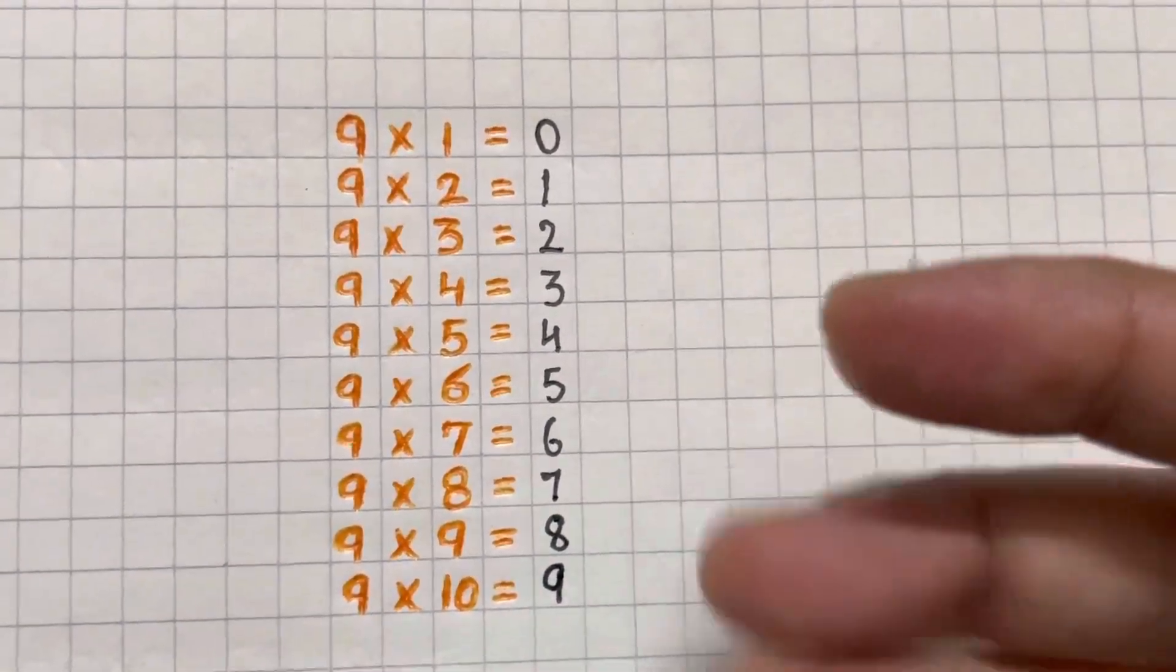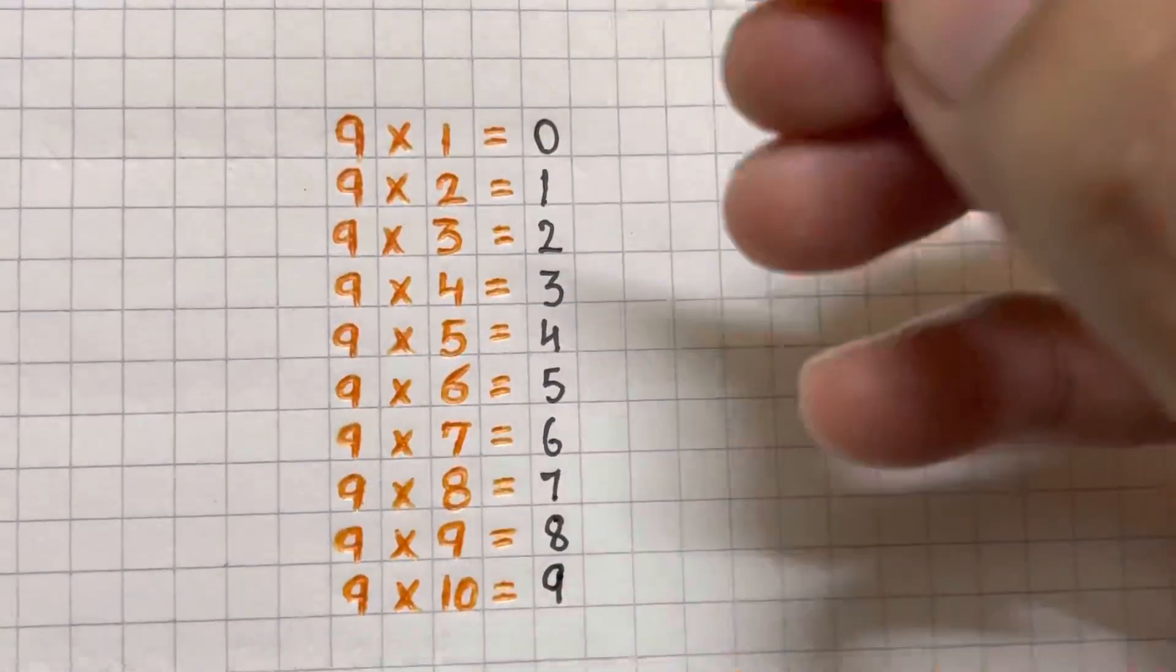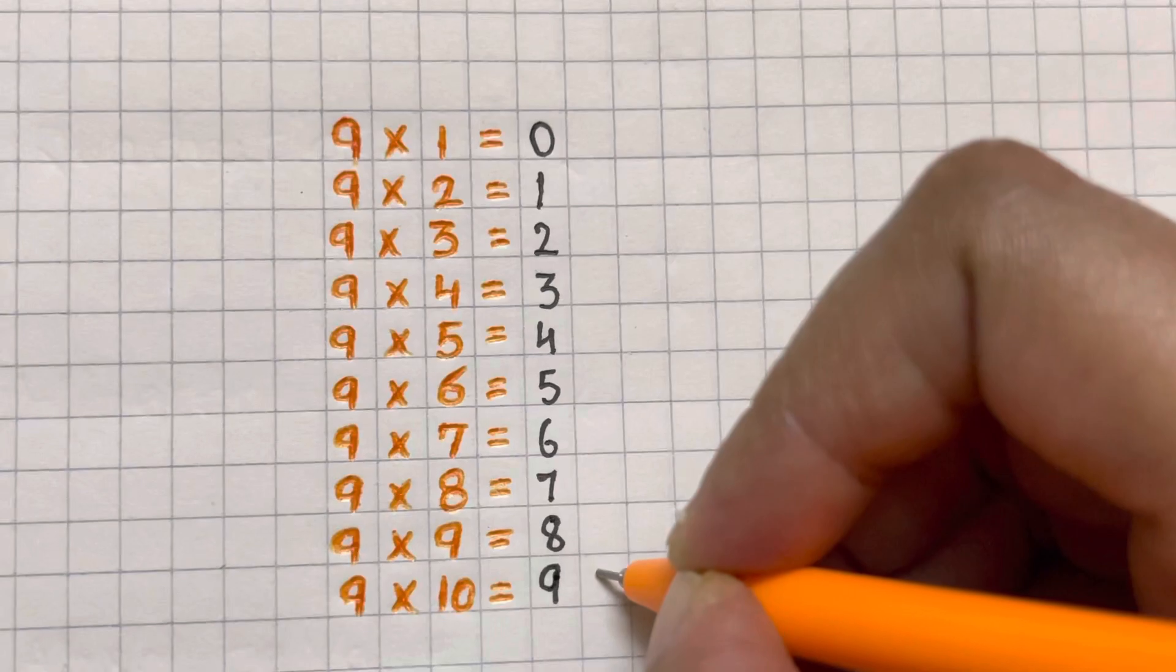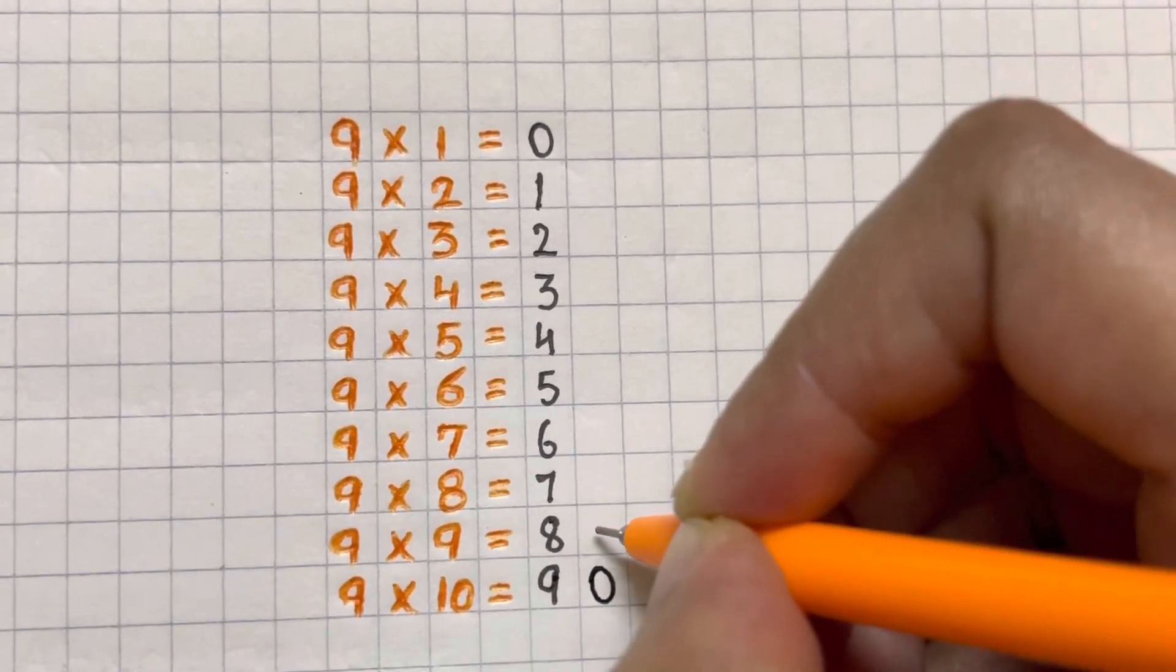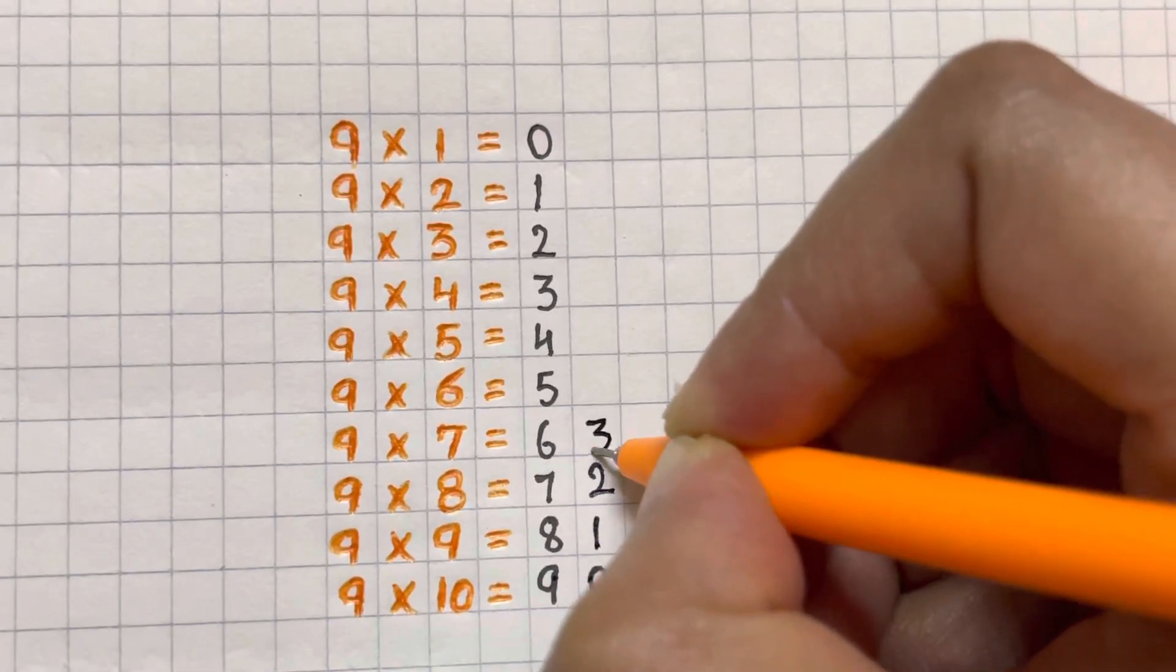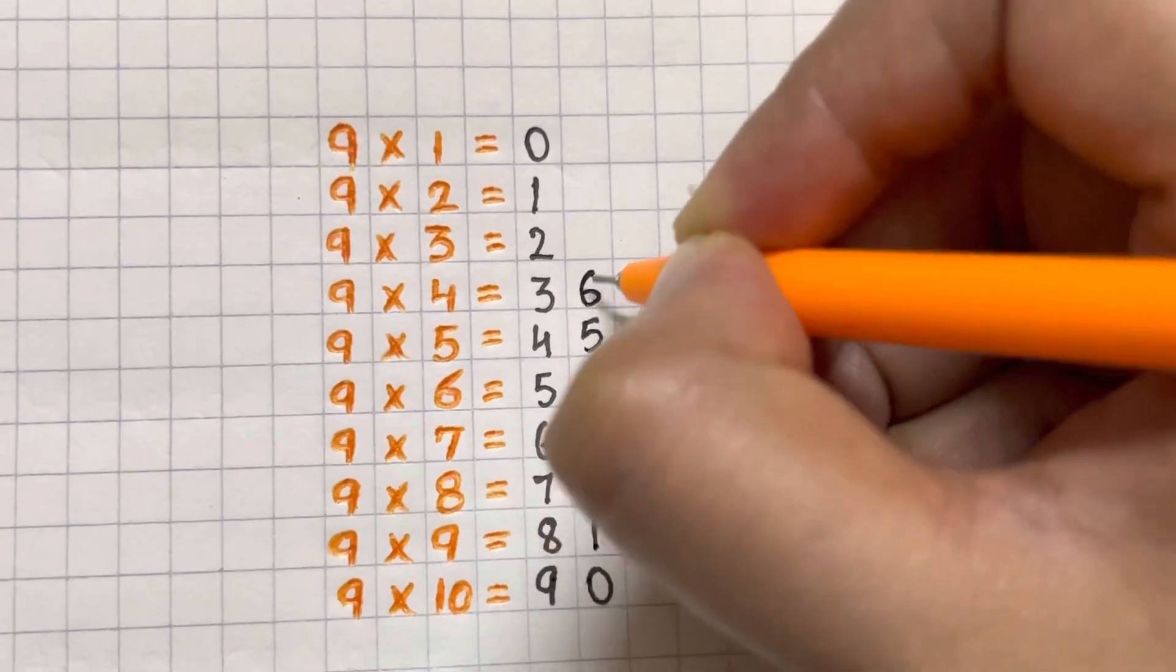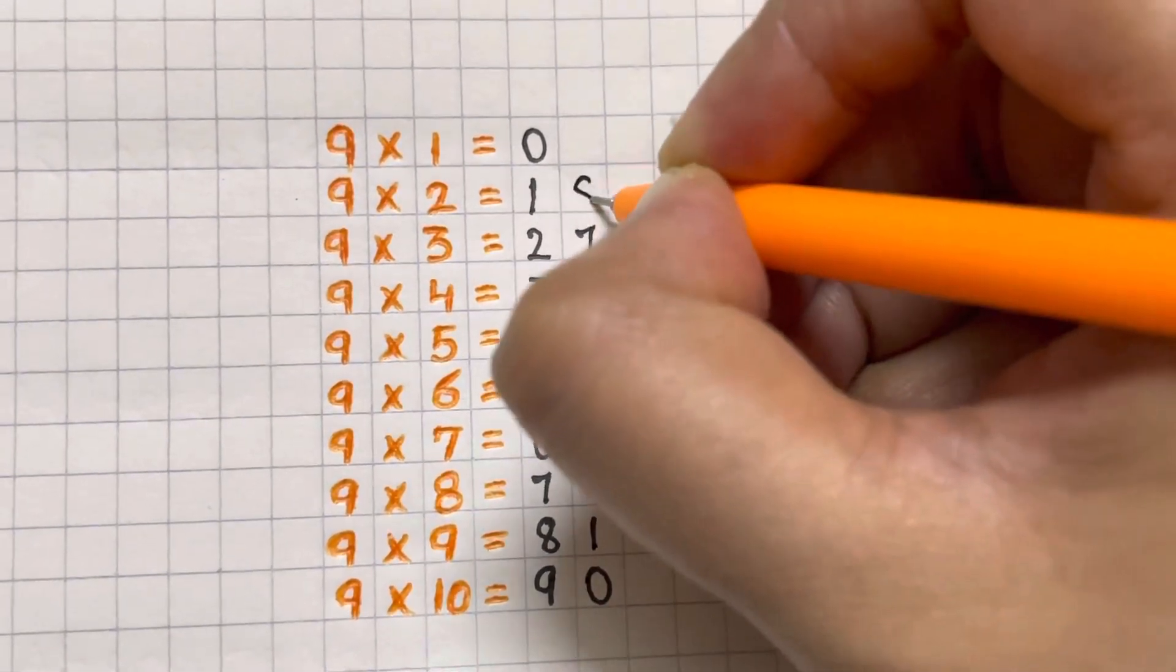Oh my god, it was so simple. Now what you have to do just go vice versa from the reverse. So all you have to do is start writing zero from the reverse: zero, one, two, three, four, five, six, seven, eight, and nine.